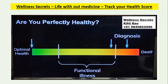Let's see what is optimal health, what is functional illness, and what is diagnosis. With health problems, only after diagnosis do we know the problem, but before that people are having functional illness and are not aware of it. I have made a simple template so that we can calculate our own health score.